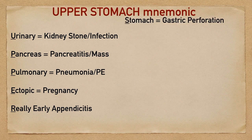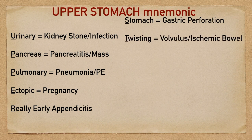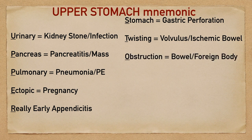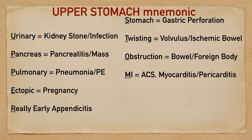S stands for stomach, and the main emergent cause to upper abdominal pain related to the stomach is gastric perforation. T stands for twisting, and this will help you remember things like volvulus as well as ischemic bowel. O stands for obstruction, and this could include bowel obstruction or foreign body ingestion that's leading to obstruction.